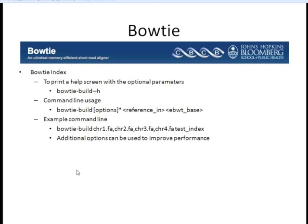As mentioned, these newer programs for aligning next-generation sequences index the genome first, so we need to create this index before we can do our alignment. To do that, we'll use the bowtie-build program within Bowtie. The command takes any options, the reference sequence, and the base of the index name. In the example shown, we didn't use options outside the default — each chromosome is listed, and 'test_index' will be the base name of the files generated by bowtie-build. You can use additional options with the -h flag or on the website to improve performance.